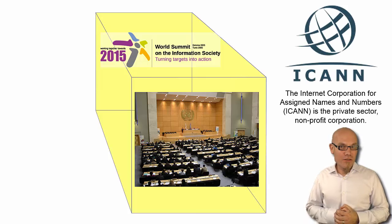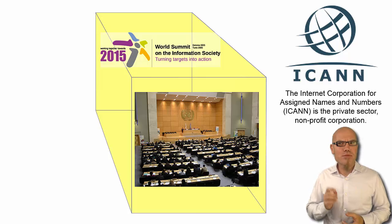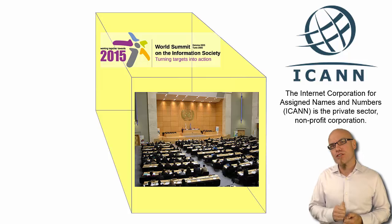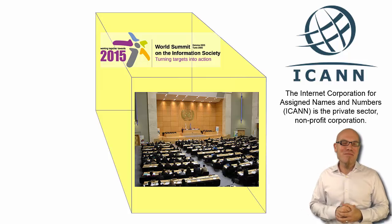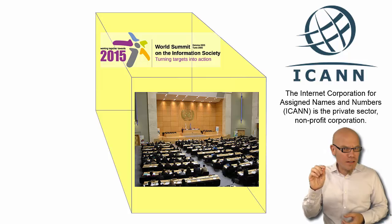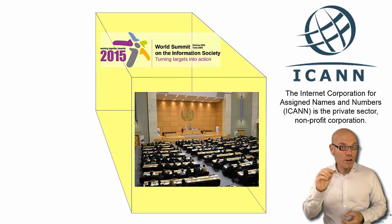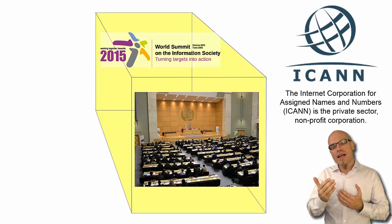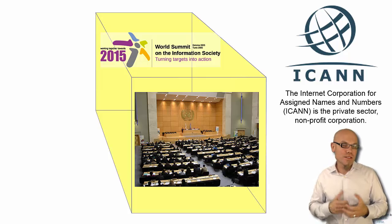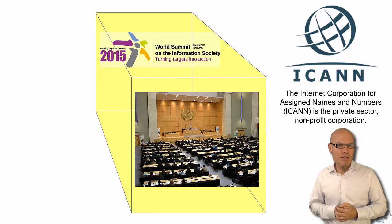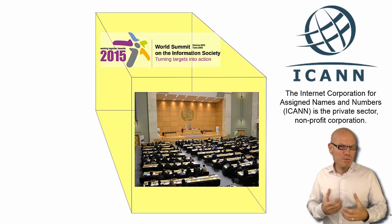Until now, the internet has traditionally been governed by ICANN — the Internet Corporation for Assigned Names and Numbers — which is a private sector, non-profit corporation located in Southern California. What it most prominently does is assign names and numbers: if you have an internet domain name address, a URL, ICANN assigns this human-readable name to a machine-readable IP address — an Internet Protocol address — which traditionally is 32 bits, and more recently 128 bits. That's what it most prominently does; it governs and administers the global internet.